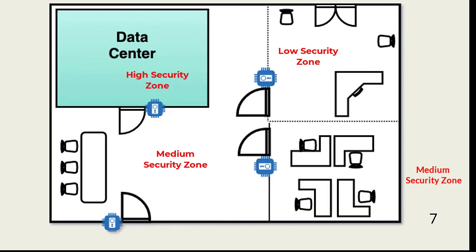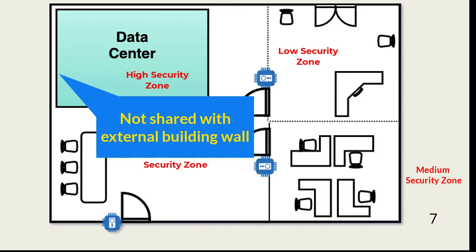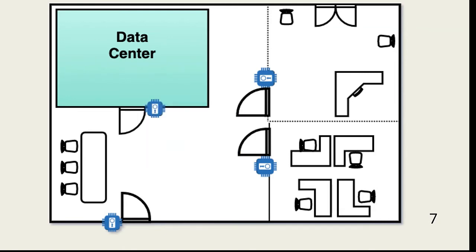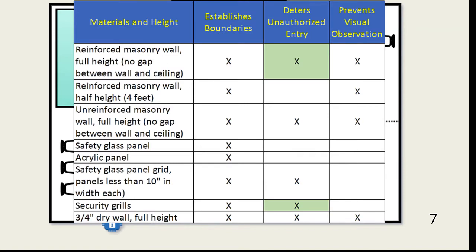The data center is a high security zone. Note that the data center wall is not shared with the external structure wall. If a data center is located on the ground floor, it should never share an external wall with a structure. Internal wall construction is important when looking at deterrence and prevention. Walls enclosing a high security area should not also form part of a building's exterior wall.